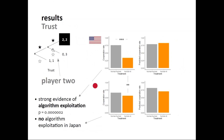The same pattern appears when looking at decisions of participants in the role of player two in the game of Trust. Cooperation rates and predicted cooperation are comparable across the two countries, with one exception: there is no algorithm exploitation in Japan, but there is a strong algorithm exploitation in the USA.